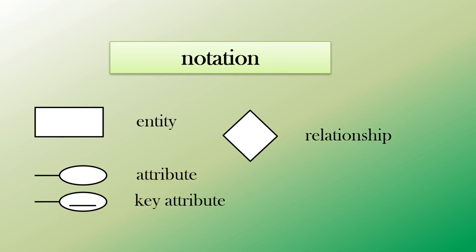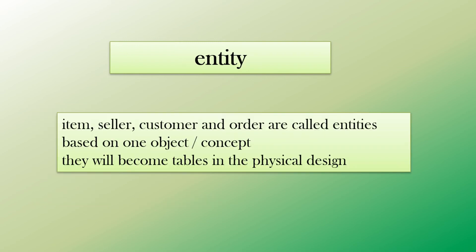The notation can be quite different in different places, but let's start off with the rectangle for entity, diamond for relationship, oval for attribute. If it's the key attribute, like a primary key, it will be underlined. So an entity: we had our items, our seller, customer, orders. These are all entities based on an object or a concept, and they'll become a table in the physical design.